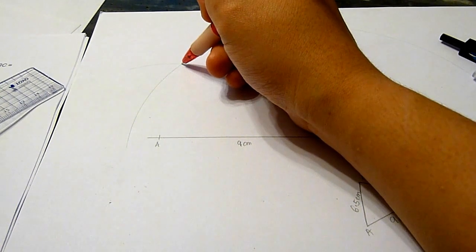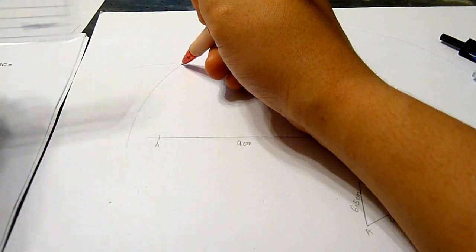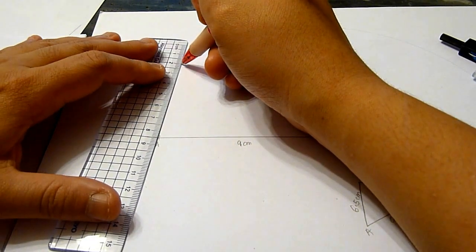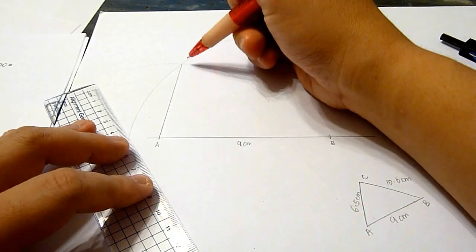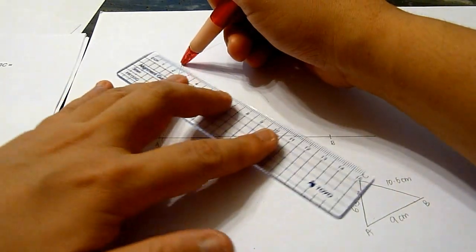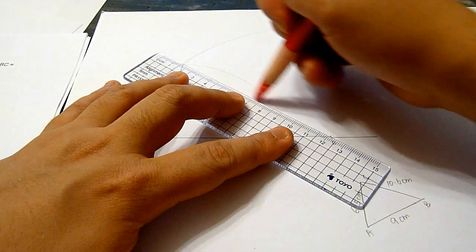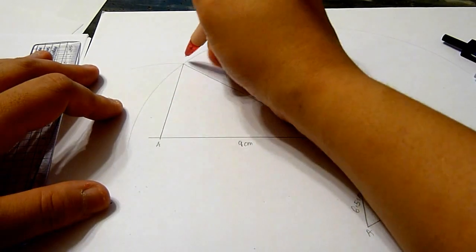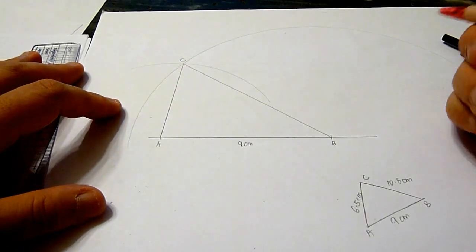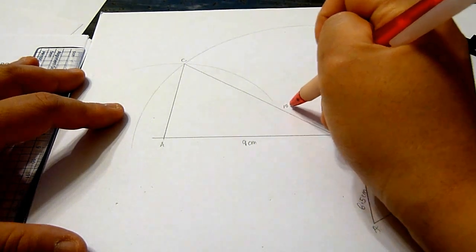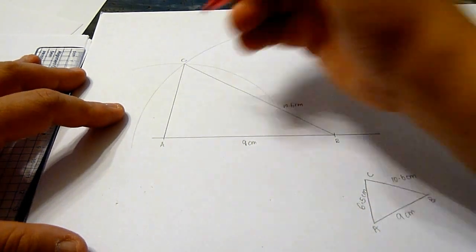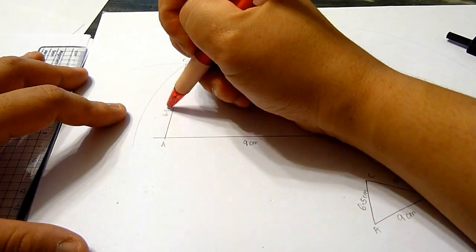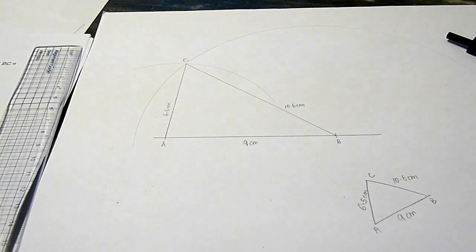The two arcs will meet at point C. Put down the measurements. We have completed the triangle.